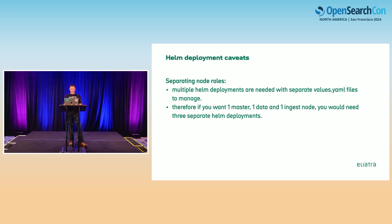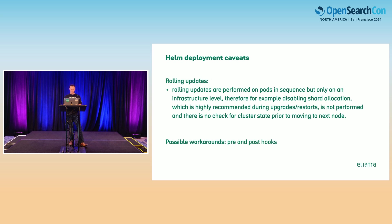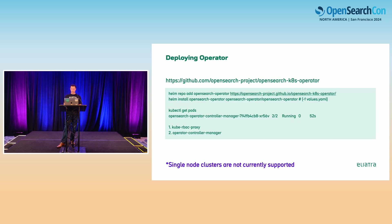With Helm deployments, separate nodes require separate deployments. More importantly, rolling updates in Helm don't disable shard allocations. Although the update is done one node at a time, it's done at the infrastructure level, not the OpenSearch level — so it doesn't check if the cluster is healthy before moving on to the next node. It just bulldozes across every node and restarts it in hopes that it works. There is a workaround using pre/post hooks, but it involves Helm knowledge. That's where the operator comes in and is super handy.